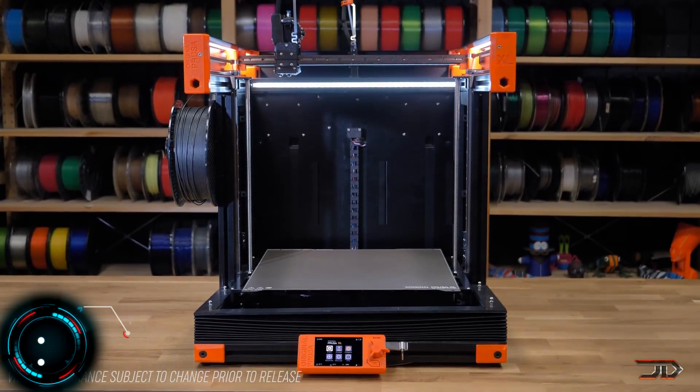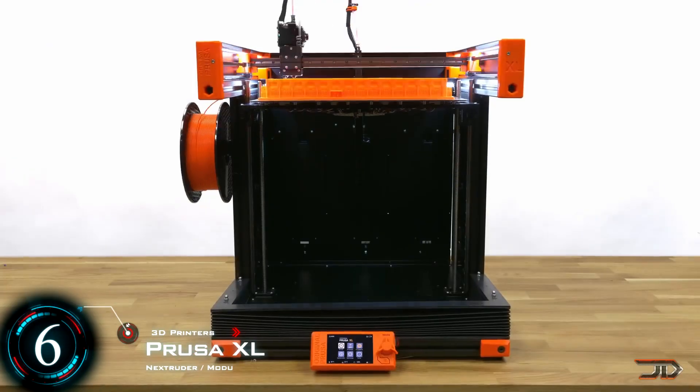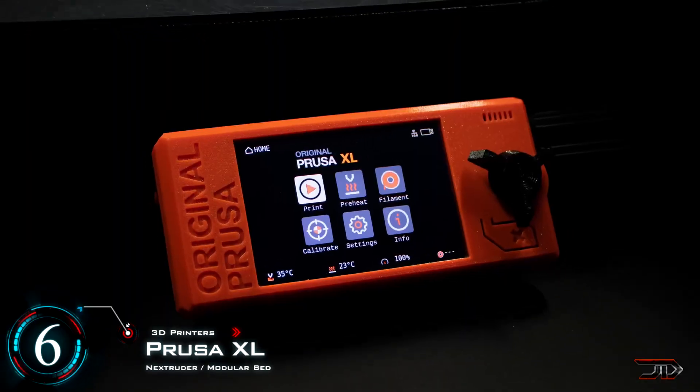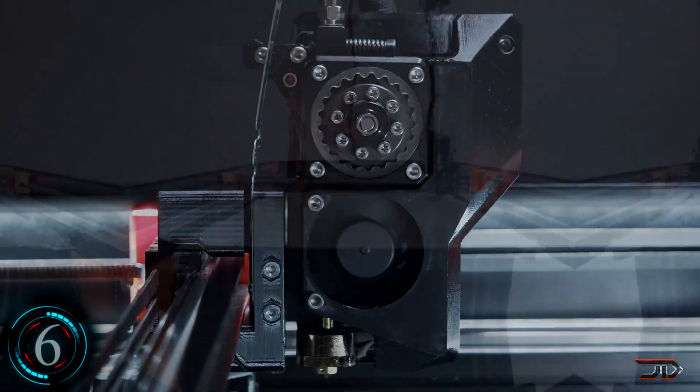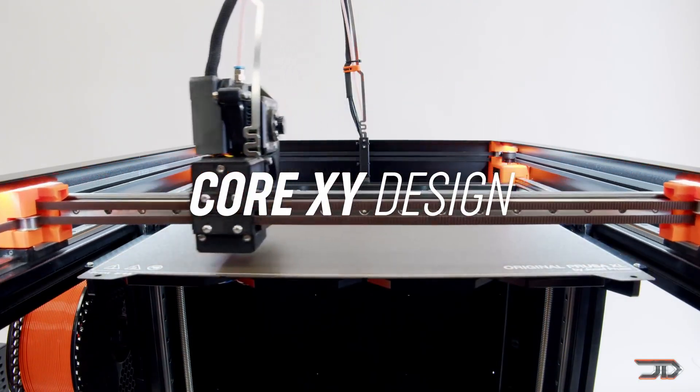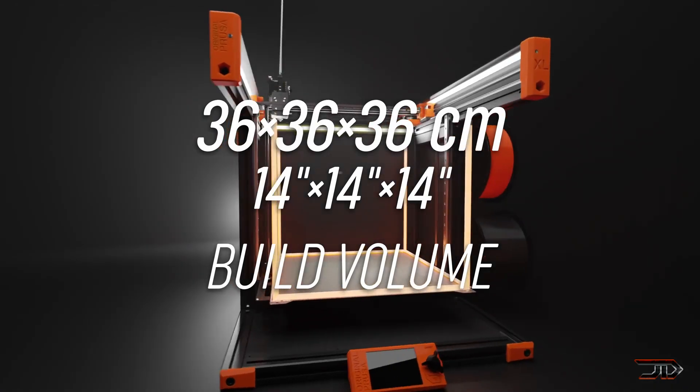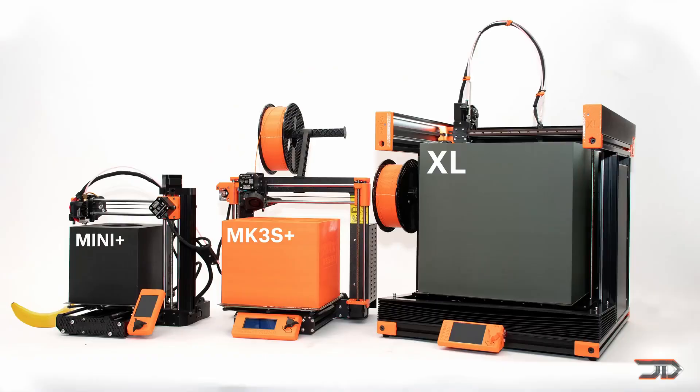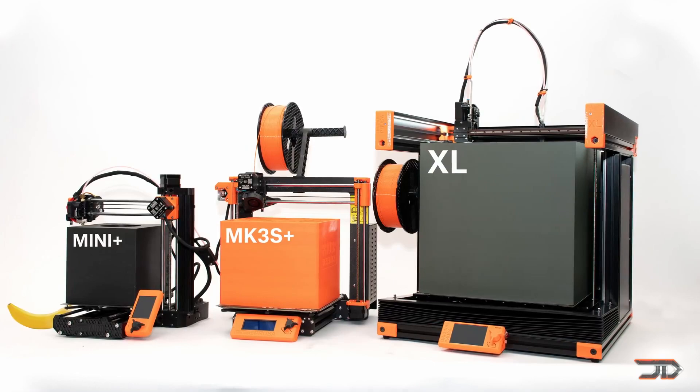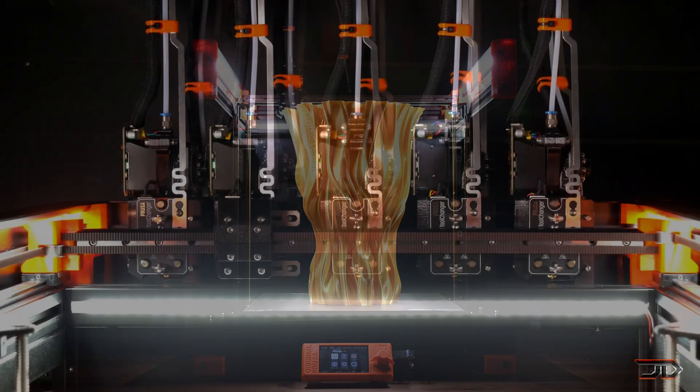Another innovative printer on the market right now is the Prusa XL. With features including a modular bed and jam detection sensors, the XL is a nice update to conventional FDM printers. Its most impressive feature is its in-built tool changer, which allows the machine to operate up to 5 different tool heads.